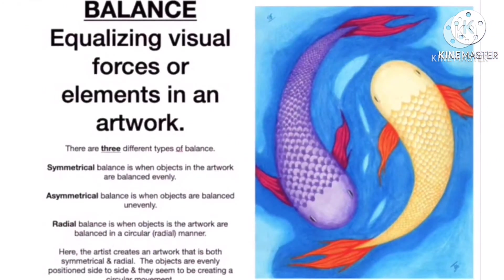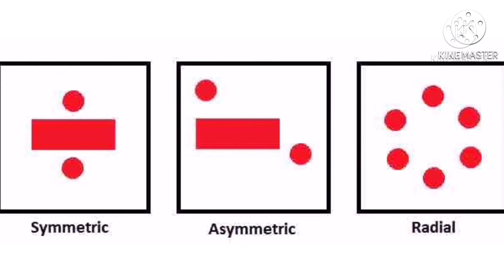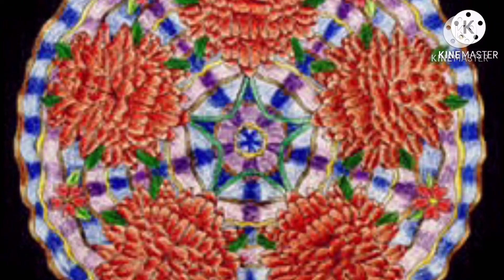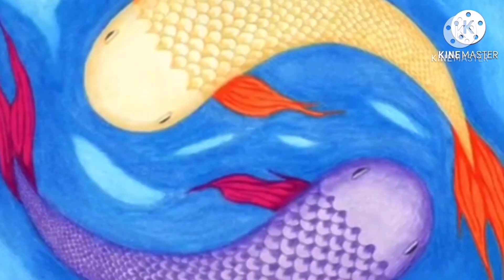The third principle is balance — equalizing visual forces or elements in an artwork. We have three different types of balance: symmetrical balance, asymmetrical balance, and radial balance. Symmetrical balance is when objects in the artwork are balanced evenly. Asymmetrical balance is when objects are balanced unevenly. Radial balance is when objects are balanced in a circular or radial manner. In this artwork, the artist creates a work that is both symmetrical and radial — the objects are evenly positioned side to side and appear to create a circular movement.